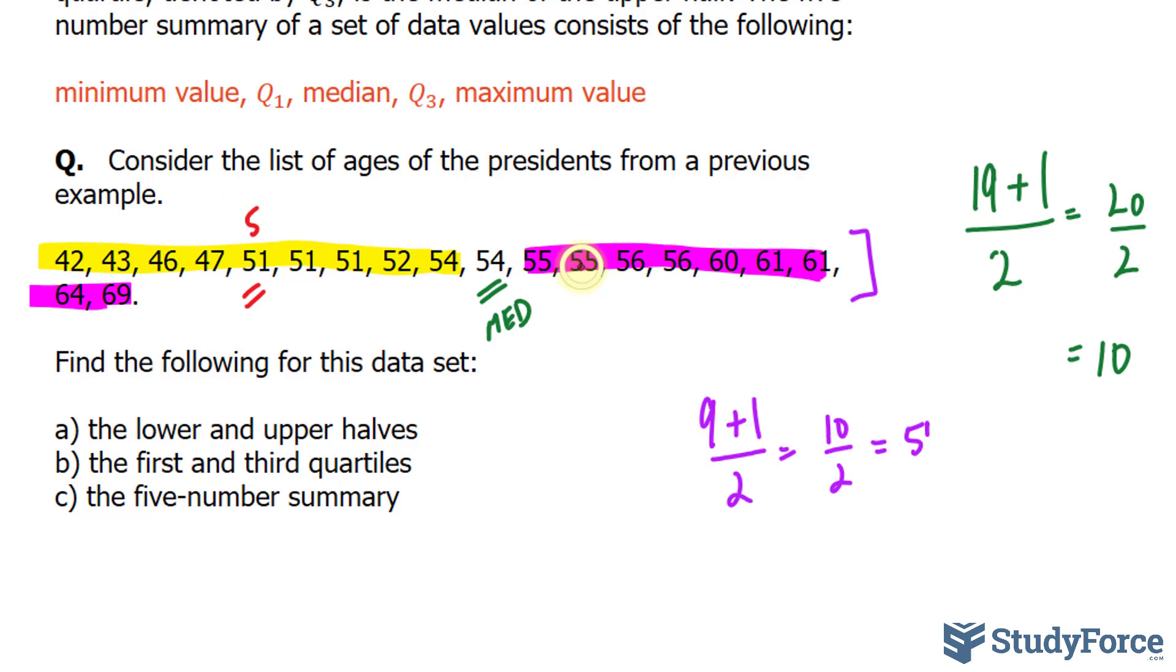And for this one, 1, 2, 3, 4, 5, it's 60. So we have 50 for the Q1 value, and 60 for the third quartile, or Q3.